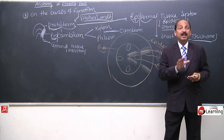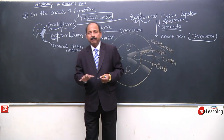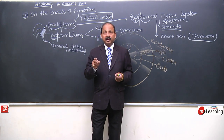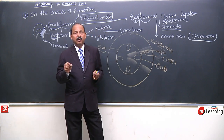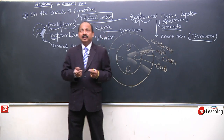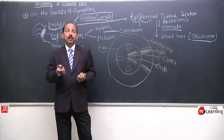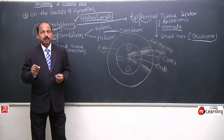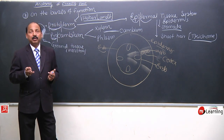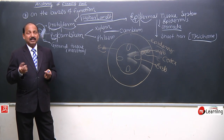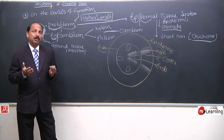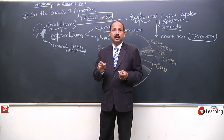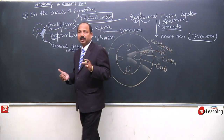So meristematic tissue on the basis of function has three types: protoderm, pro-cambium, and ground meristem. Protoderm forms the epidermal tissue system. Pro-cambium forms xylem, phloem, and cambium. Ground meristem forms the ground portion of the plant. On the basis of position, we saw apex, intercalary, and lateral. This topic — meristematic tissue — is now complete.